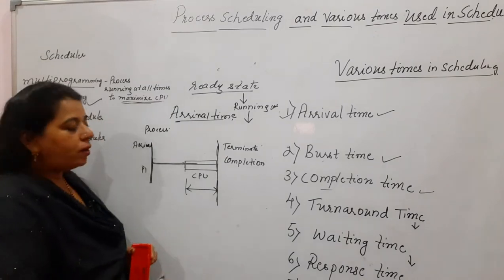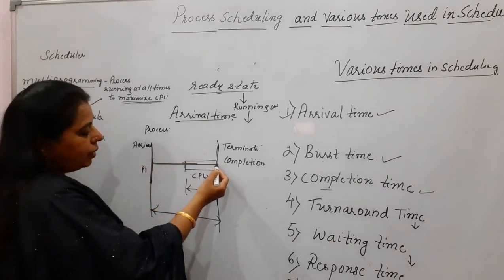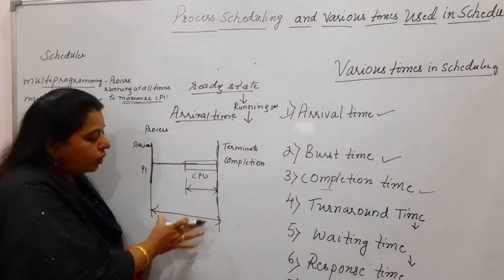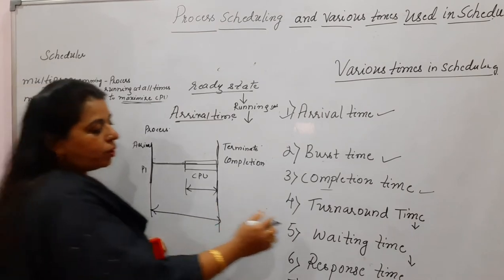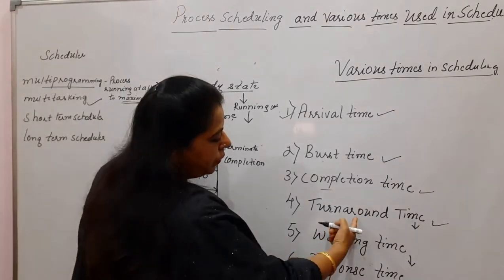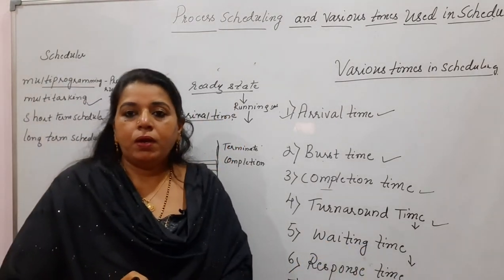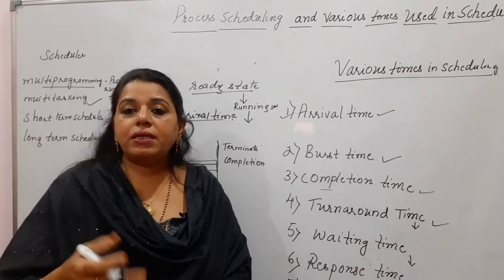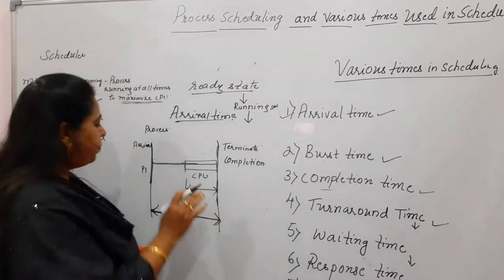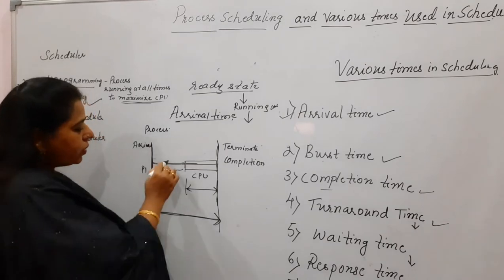Next we have the turnaround time — the total time a process spends in the system. It has entered at one point and is exiting later, having waited for some time and then utilized the CPU for some time. The total time a process spends in the system is the turnaround time, and it is a duration. Waiting time is the time a process waits in the ready queue to get the CPU — the time that process is waiting in the ready queue.